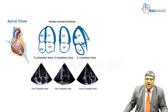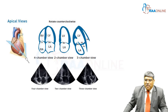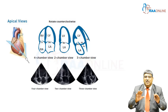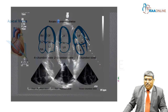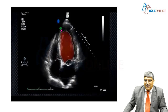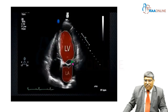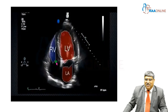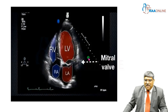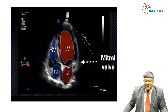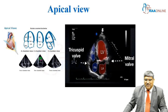Coming to the apical view, you place the probe in the apical part and you cut the heart at three different angles, moving the probe counterclockwise to get three different views. In the first view, you get a nice four-chamber view. Here you can see the left ventricle, left atrium, right ventricle, and the right atrium along with both the mitral and the tricuspid valves.